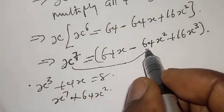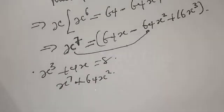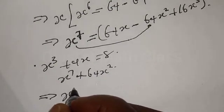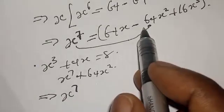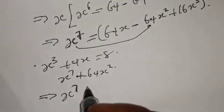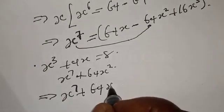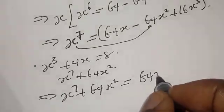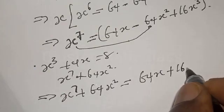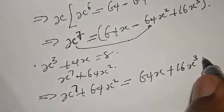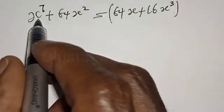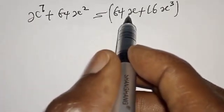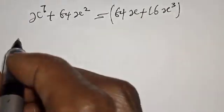So let's compare these two. This implies that we have s raised to the power 7. If minus 64s squared crosses to the other side it becomes plus 64s squared, which would be equal to 64s plus 16s raised to the power 3. Then we know that s raised to the power 7 plus 64s squared is equal to 64s plus 16s raised to the power 3.